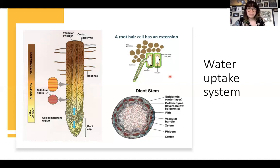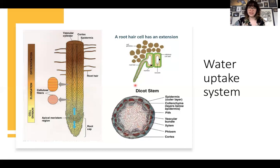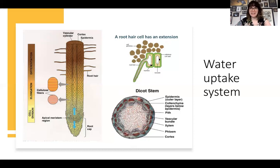Root hairs are actually just projections of the cell — if this is one of the cells lying toward the inside, the adjacent cell has the root hair. The nucleus is in the same cell; the root hair is just a long thread-like projection of cytoplasm with a vacuole inside, encased in cell wall. Looking at a cross section, we can see all the layers — I chose a dicot stem. We'll look at those in a little more detail shortly.